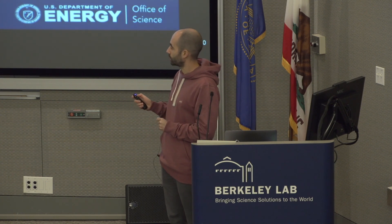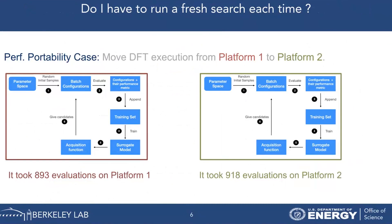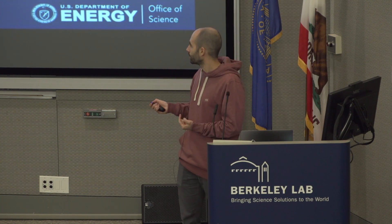For our performance portability case, we want to move the DFT application from one platform to another. For example, from Cori — where a Bayesian optimization search took 893 evaluations to find the optimal configuration — to Perlmutter, where a fresh search took 918 evaluations. Of course, 918 evaluations is far better than 10 billion, but even completing one single DFT execution can take several hours. So these represent many computation hours. Is there any way to reduce the number of required evaluations even further?